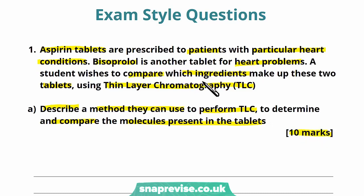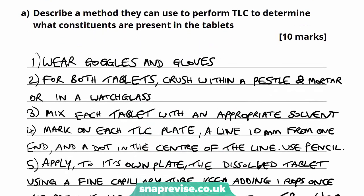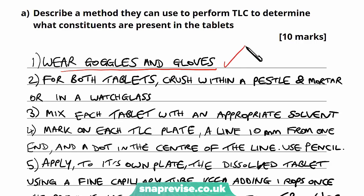Essentially they've got two tablets. They're using chromatography to see which ingredients are in each of them and they want to perform a method that will allow them to compare these ingredients within both tablets. The first thing I've mentioned is a safety point which should be carried out throughout the whole practical — wear goggles and gloves. We don't know anything about these tablets, and the students certainly don't know what active ingredients are within them or whether they would be reactive, toxic or corrosive.